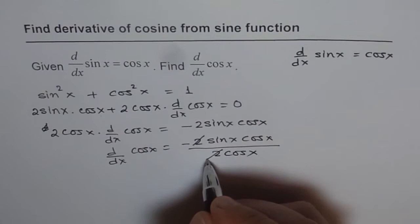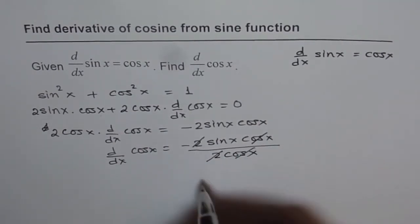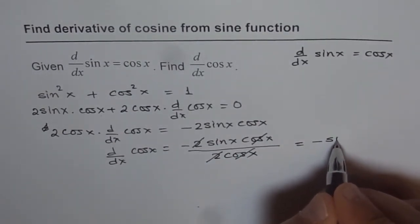Now here 2 and 2 will cancel out. And cos x cancels with cos x and you're left with minus sin x.